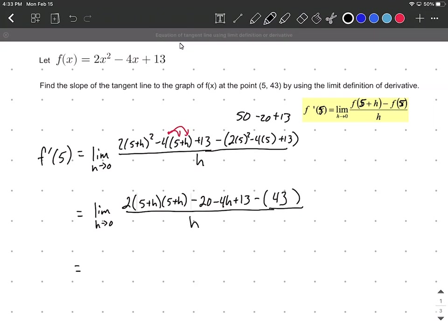Next, multiplying out: lim(h→0) 2(25 + 5h + 5h + h²) - 20 - 4h + 13 - 43.